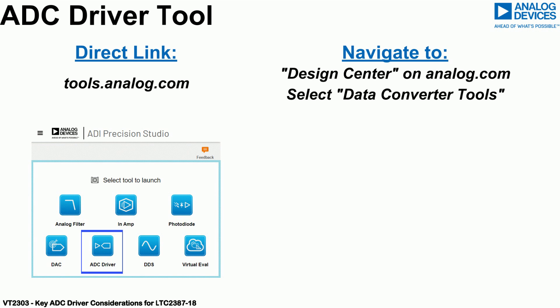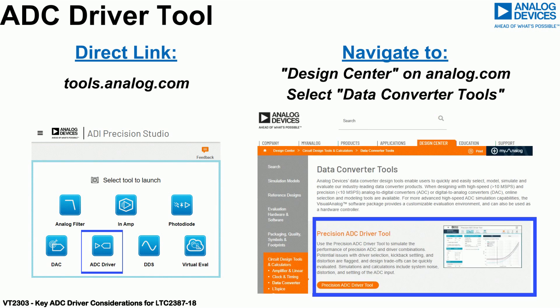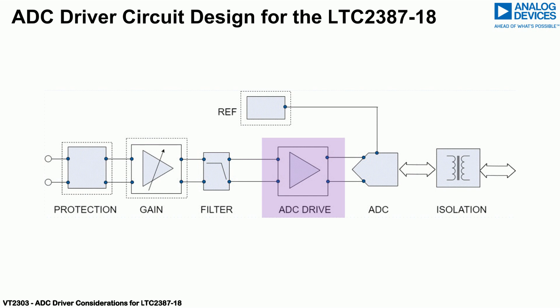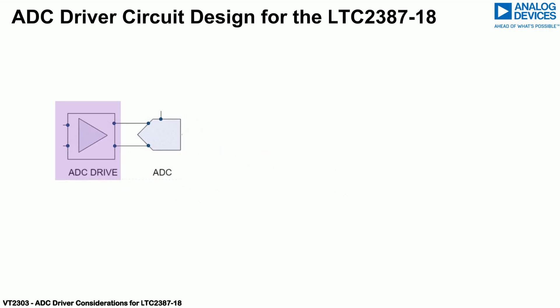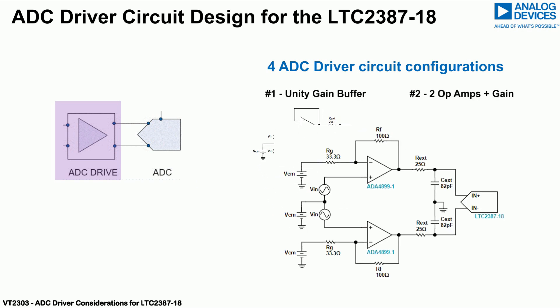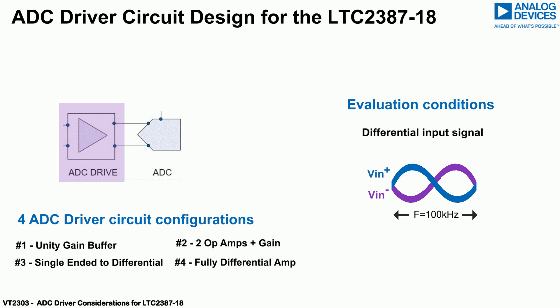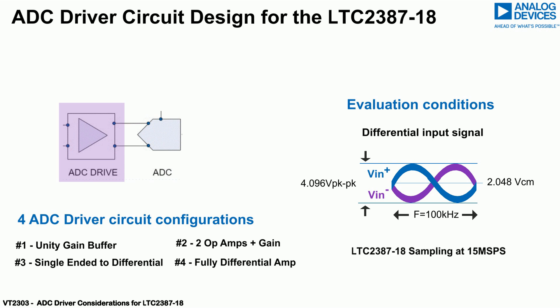The Precision ADC Driver Tool, which can be found on the Education section under Data Converter Tools on Analog.com, will be used to highlight the key recommendations when designing an ADC driver circuit. Four different circuit configurations are evaluated, with associated SNR and THD performance obtained for each, assuming a 100 kHz differential input signal with an amplitude of 4.096 V peak-to-peak, at a common mode voltage of 2.048 V, with the LTC 2387-18 sampling at 15 mega-samples per second.